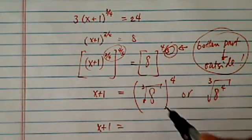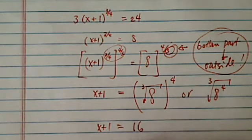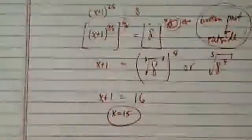Then I have x plus 1. Here it's pretty simple. This is 2. 2 to the 4th is 16. So x is equal to 15. That's our answer.